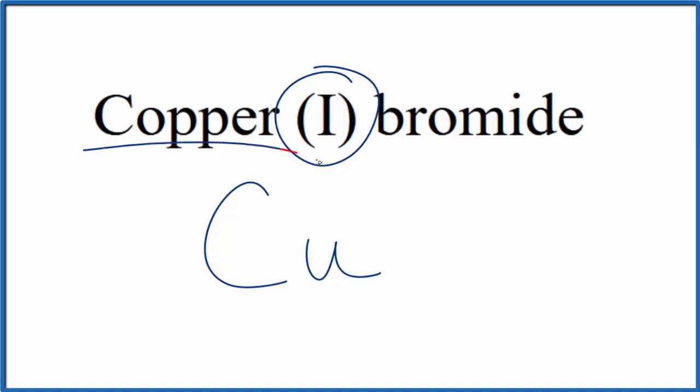In this Roman numeral 1, that means copper is a transition metal, and we're going to have a 1 plus here on the copper.